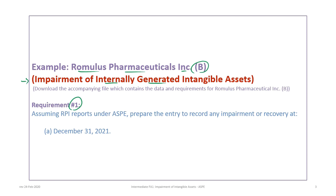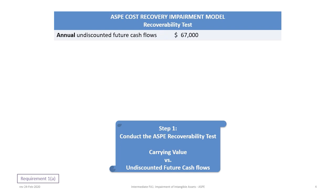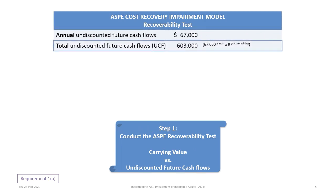Requirement one requires us to assume that Romulus reports under ASPE and prepare the entry to record any impairment or recovery at December 31st, 2021. As we did with ASPE in impairment of property, plant, and equipment, we start by conducting an ASPE recoverability test, which is determined by comparing the carrying value of the asset to the undiscounted future cash flows. The annual undiscounted future cash flows given in the problem are $67,000 per year, and at 2021 there are nine years remaining, giving total undiscounted future cash flows of $67,000 × 9 = $603,000.